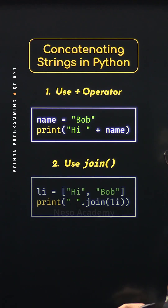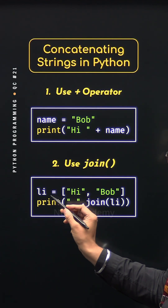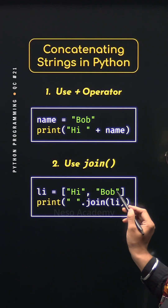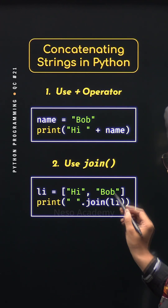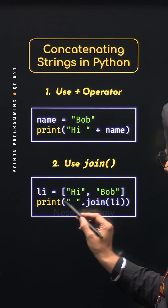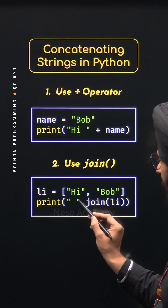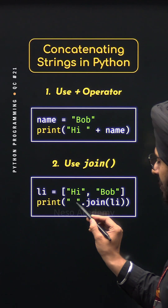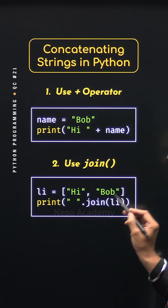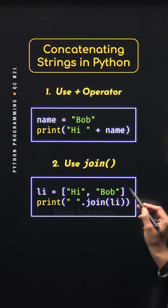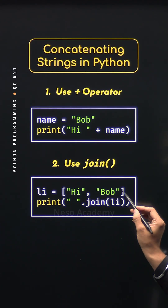For example, here I have defined this list 'li' with these two strings: 'hi' and 'bob'. Inside this print function, I have applied the join method on this separator, which is the white space. And to this join method, I have passed 'li', which is this list.